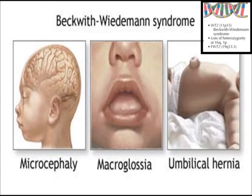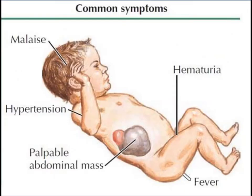Another associated syndrome is Beckwith-Wiedemann syndrome, which features macroglossia, microcephaly, and umbilical hernia, and there is mutation of the WT2 gene. The most common symptoms of Wilms tumor are palpable abdominal mass, hematuria, fever, malaise, and hypertension.